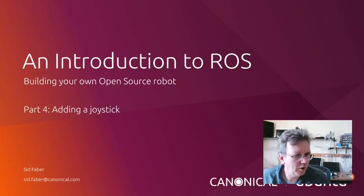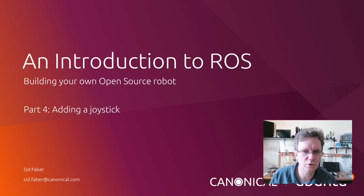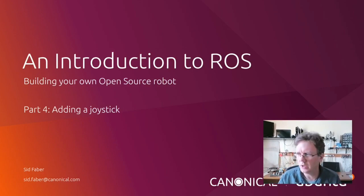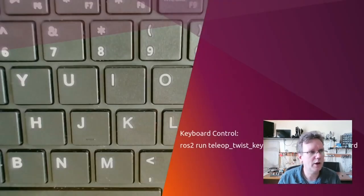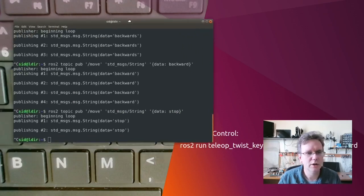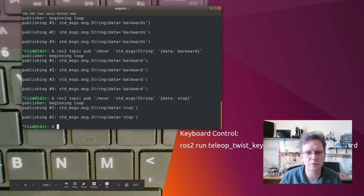Let's get started putting a joystick on our robot. We've got all our controls in place and we know we've got some ROS structure set up. It's time to actually add the joystick. The first thing I want to do is actually try out a keyboard-operated joystick rather than the joystick itself. We're going to use this ROS construct called the Teleop Twist Keyboard.